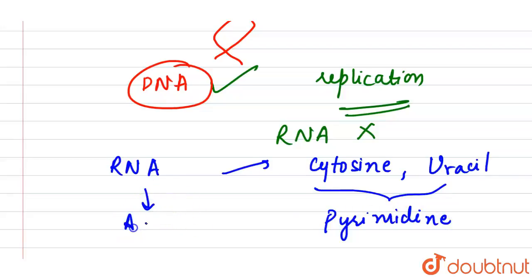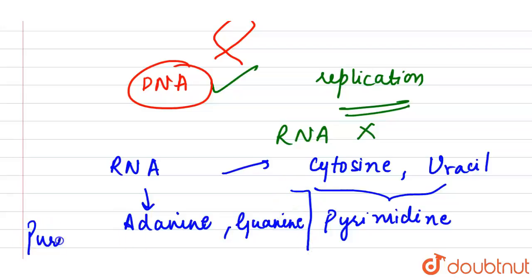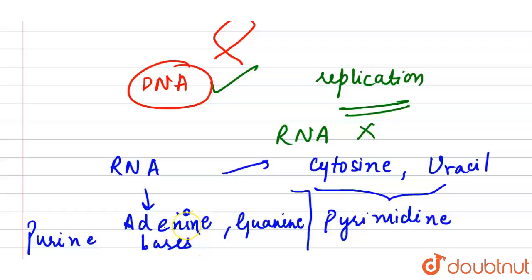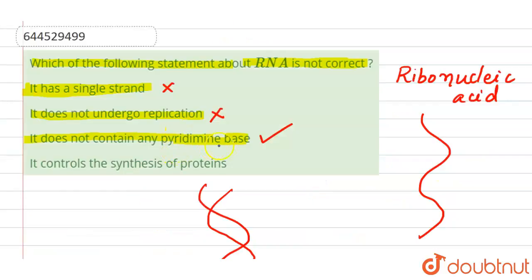RNA has adenine and guanine as the purine bases. Regarding pyrimidine bases, they consist of uracil, thymine, and cytosine. In RNA, we have cytosine and uracil present, which means RNA does contain pyrimidine bases. So the statement that RNA does not contain any pyrimidine base is incorrect.